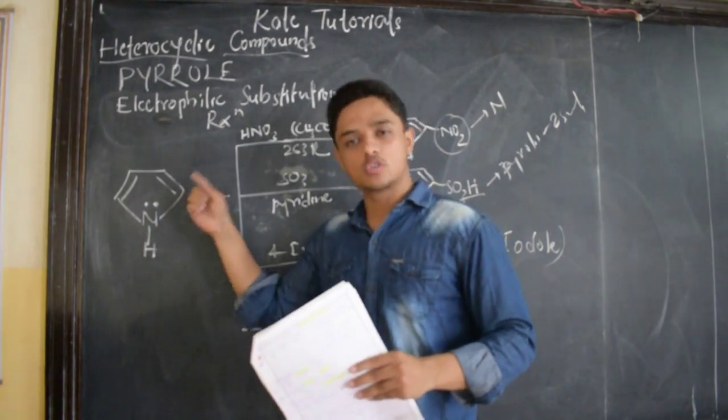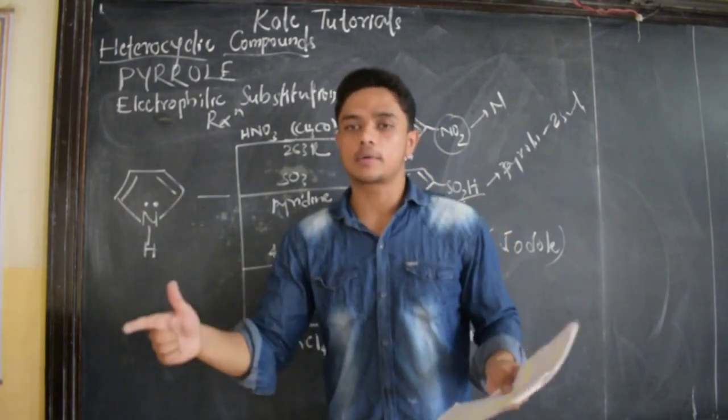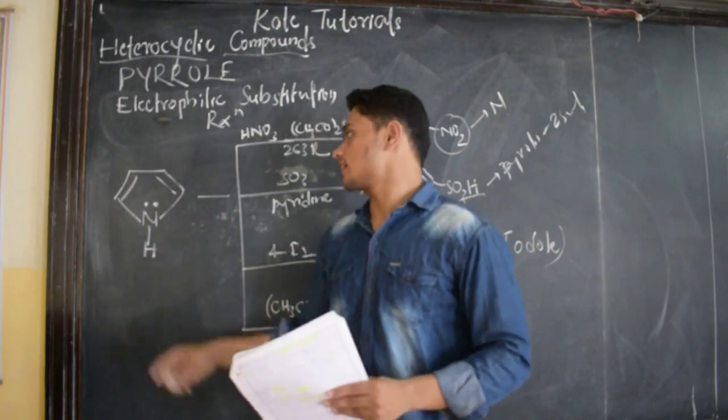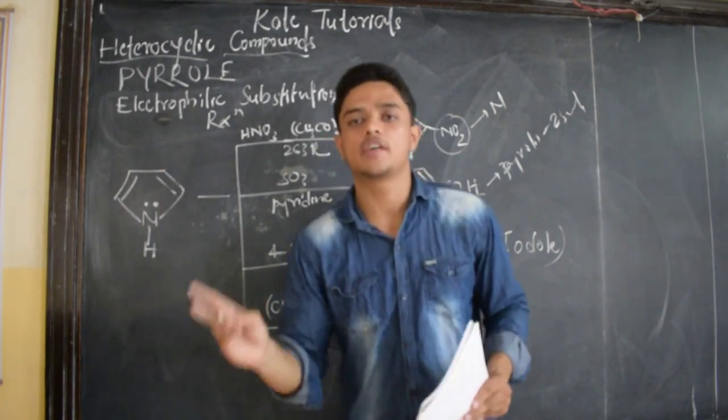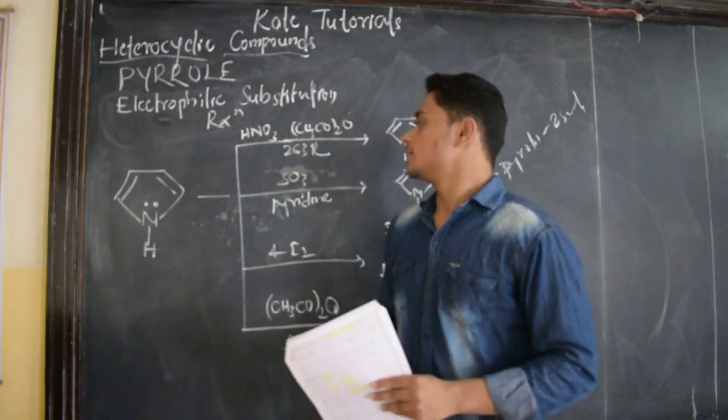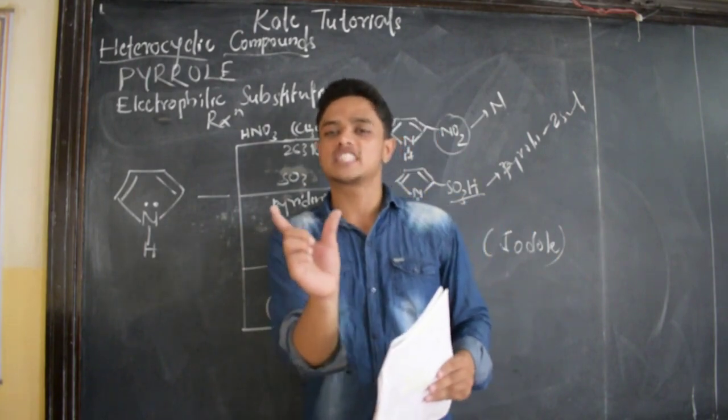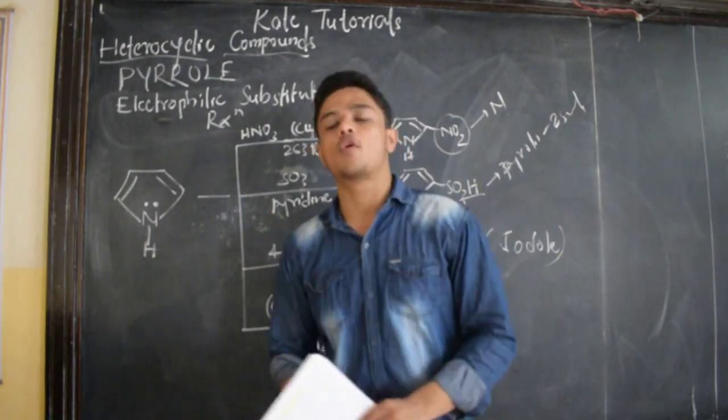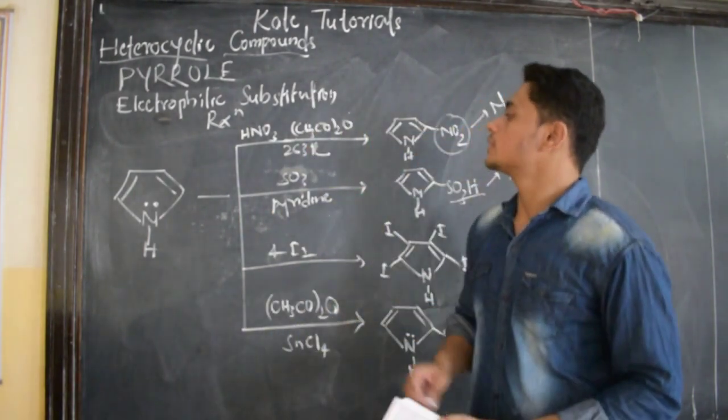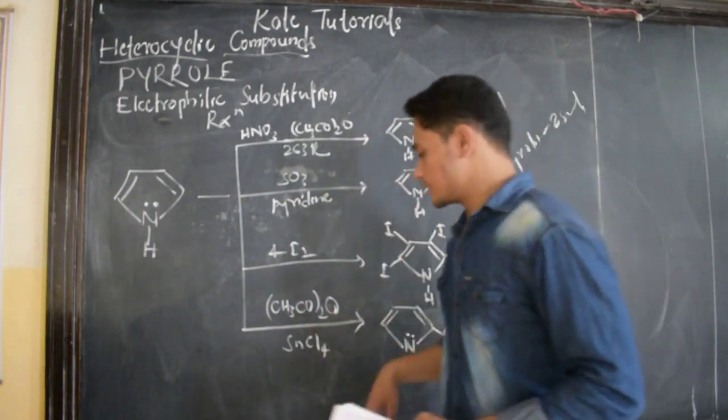So the electrophile will attack the second position because the compound will be stable due to more canonical structures compared to position 3. If it attacks the third position, then the number of canonical structures are less, so the compound formed will be less stable.